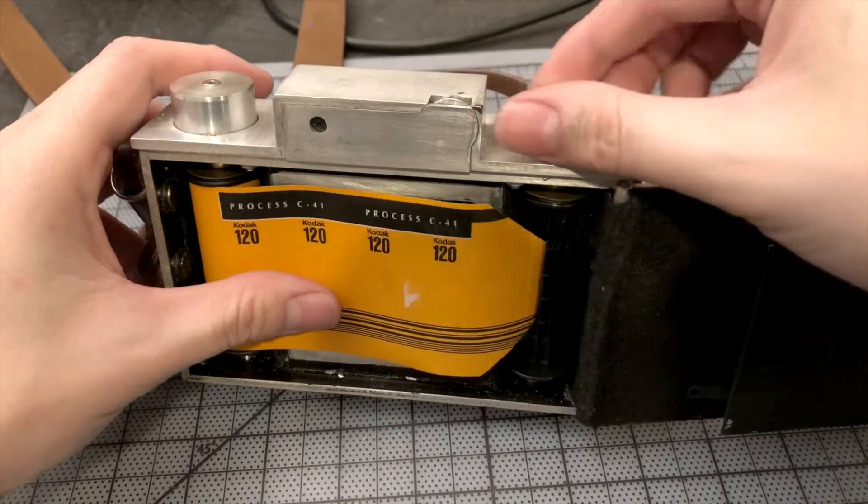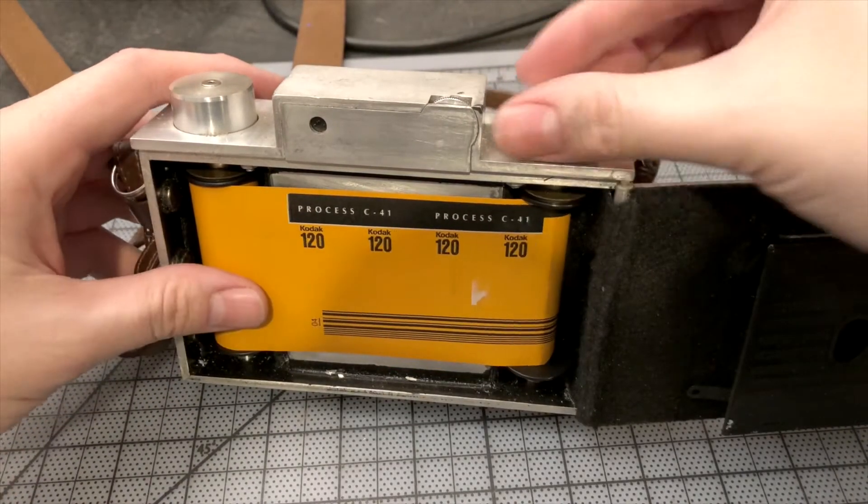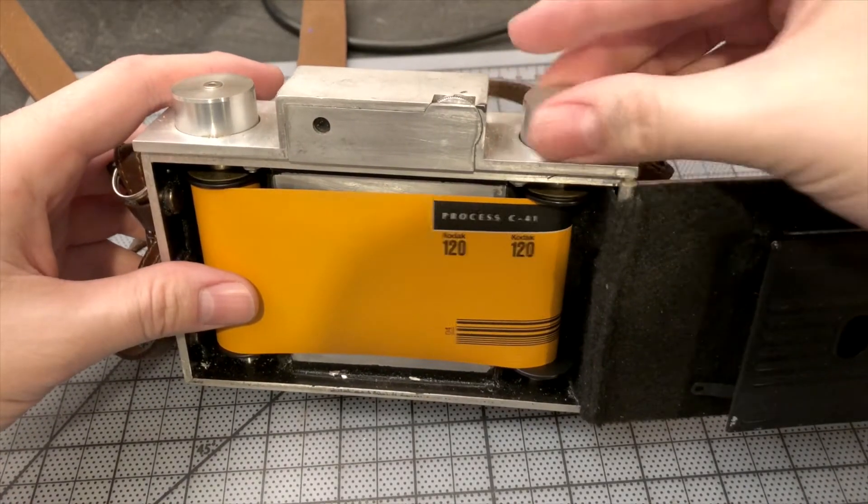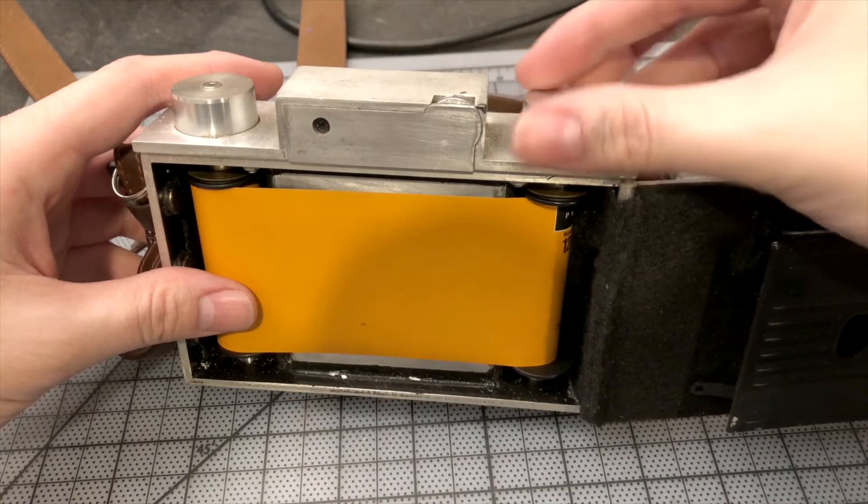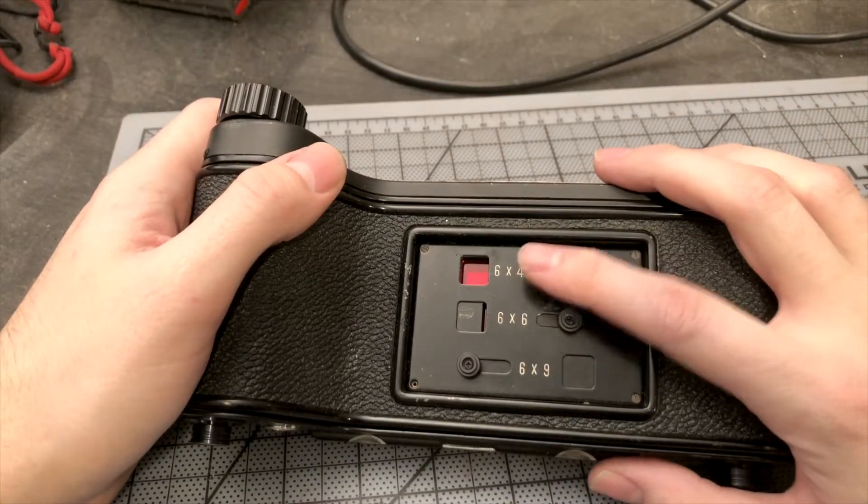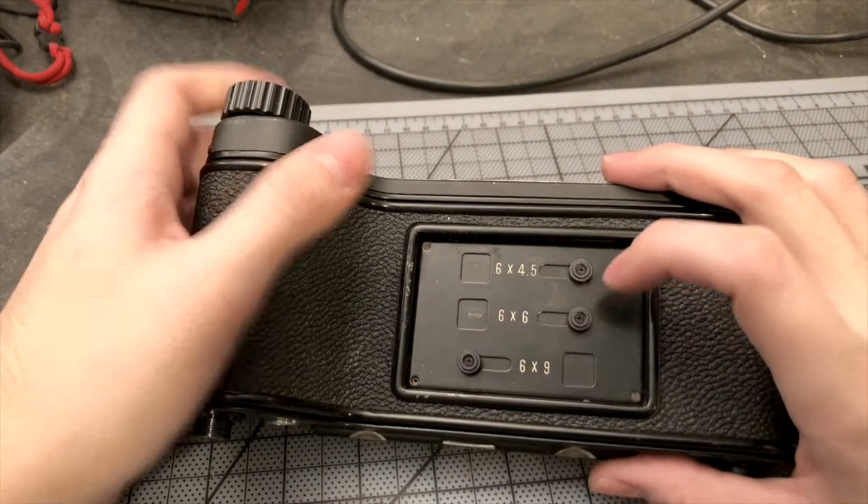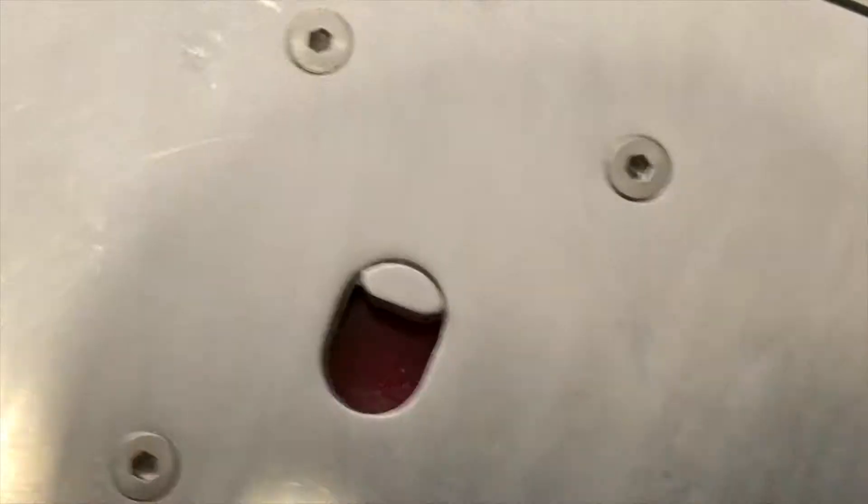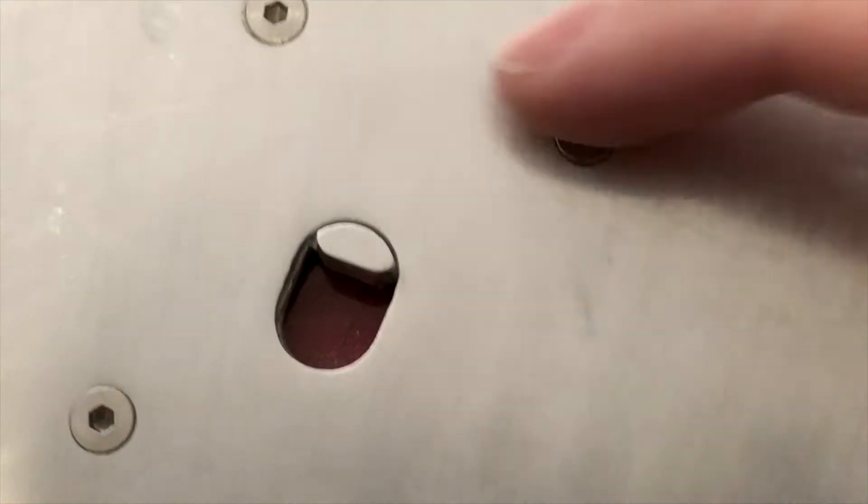You can theoretically make this frame any size you want. Keep in mind there are standard film sizes printed on the back of the film that are used for film advancing, and those sizes are 645, 66, and 69. So if you wanted to use a different frame size, you would have to come up with some other way of indexing other than using the viewport on the back of the camera, like this one does.